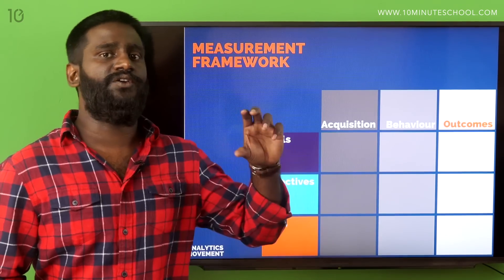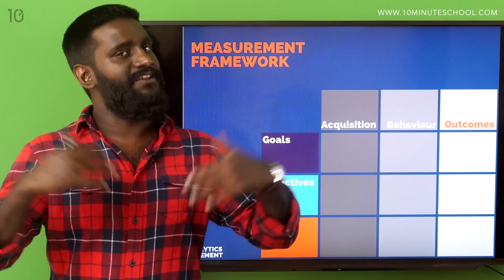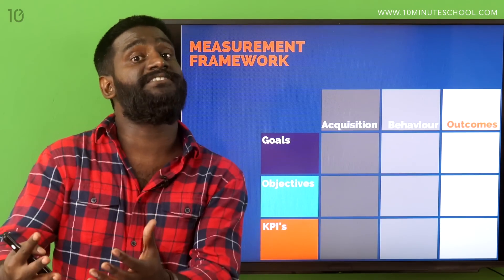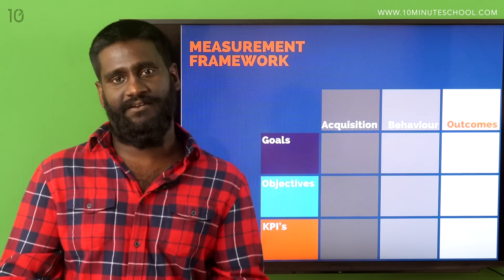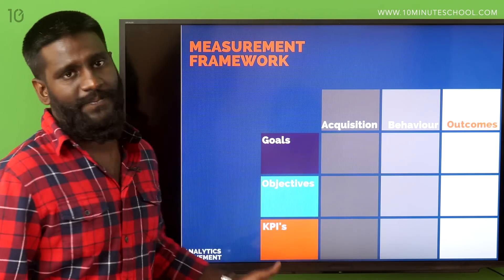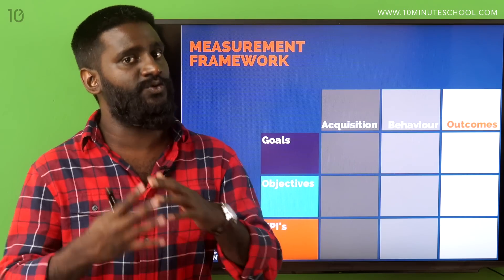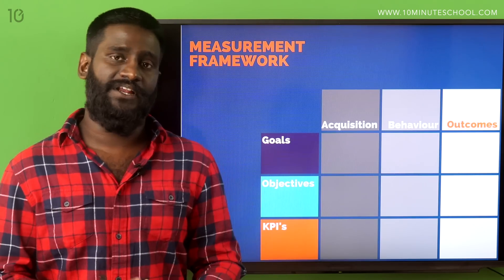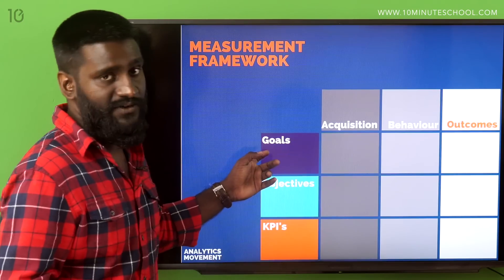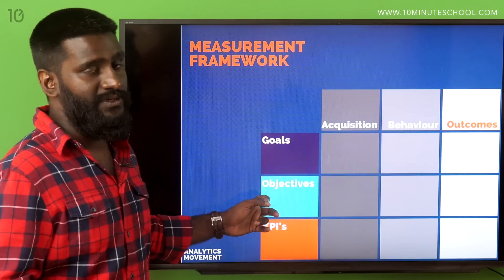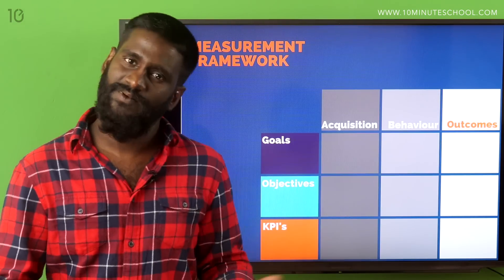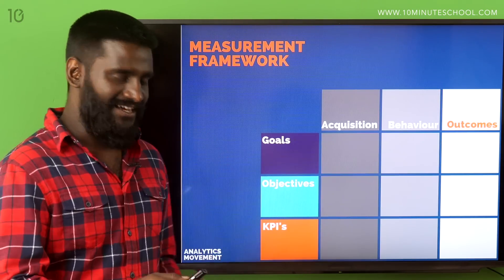Then you have objectives — how are you going to achieve that? If you want to increase revenue, there can be different ways. For example, you can bring in more customers, or you can get more business from your existing customers. There are so many different ways. And then what are the KPIs — what are you going to measure to know if you're on the right track? For example, if your goal is to increase revenue and your objective is to increase it through new visitors, then your KPI is number of new customers. It's that simple.